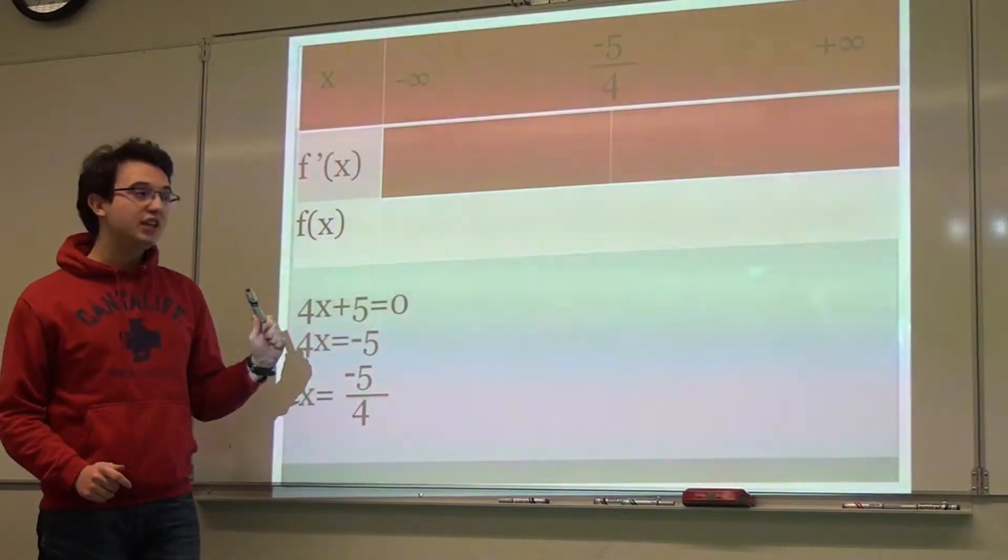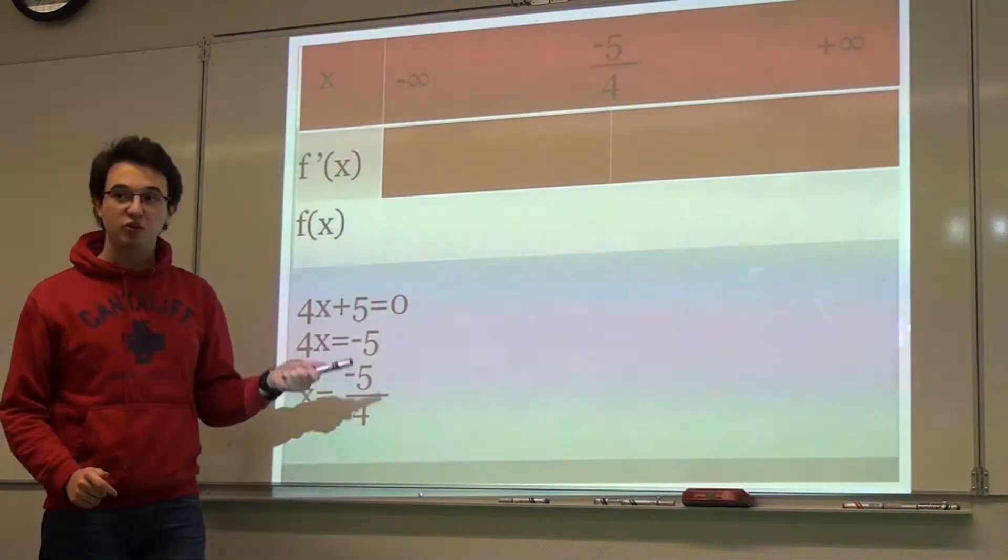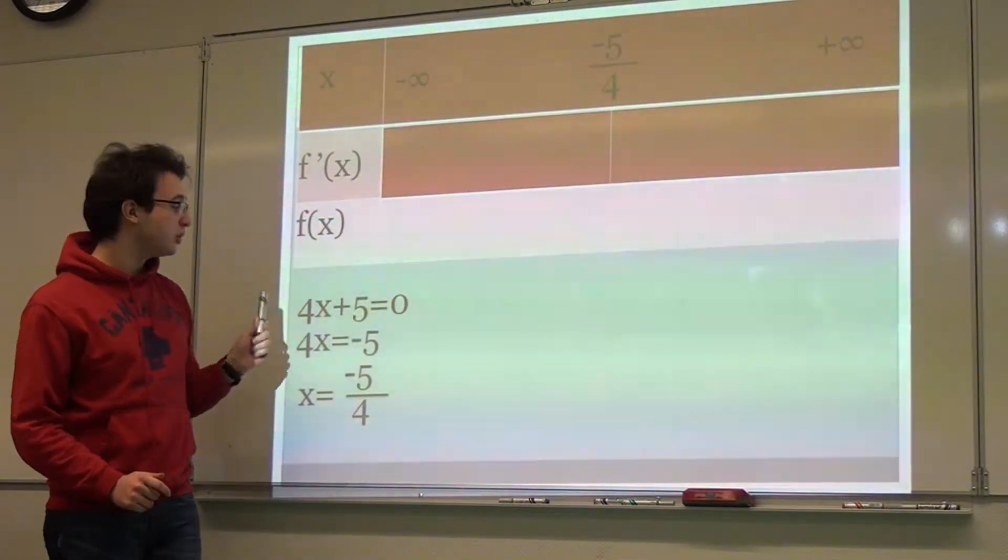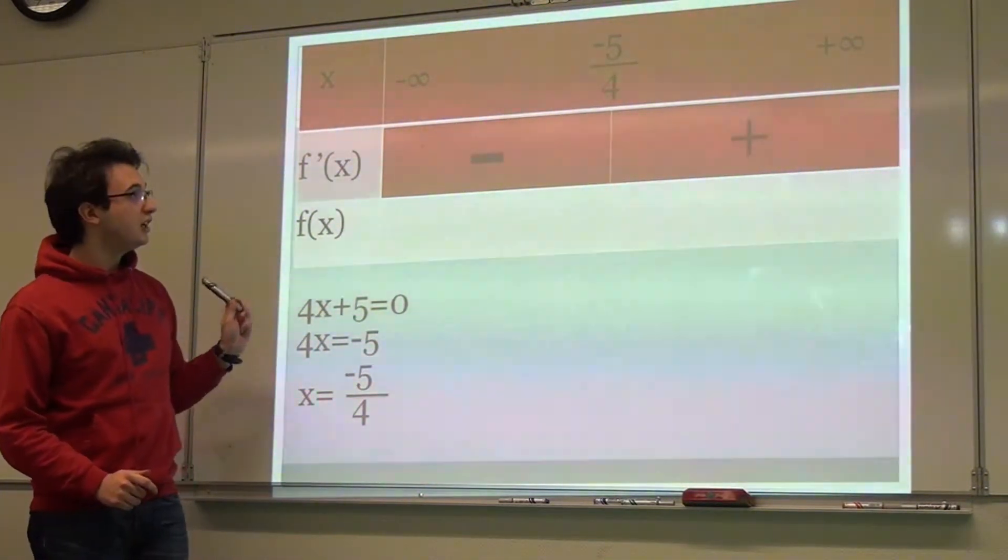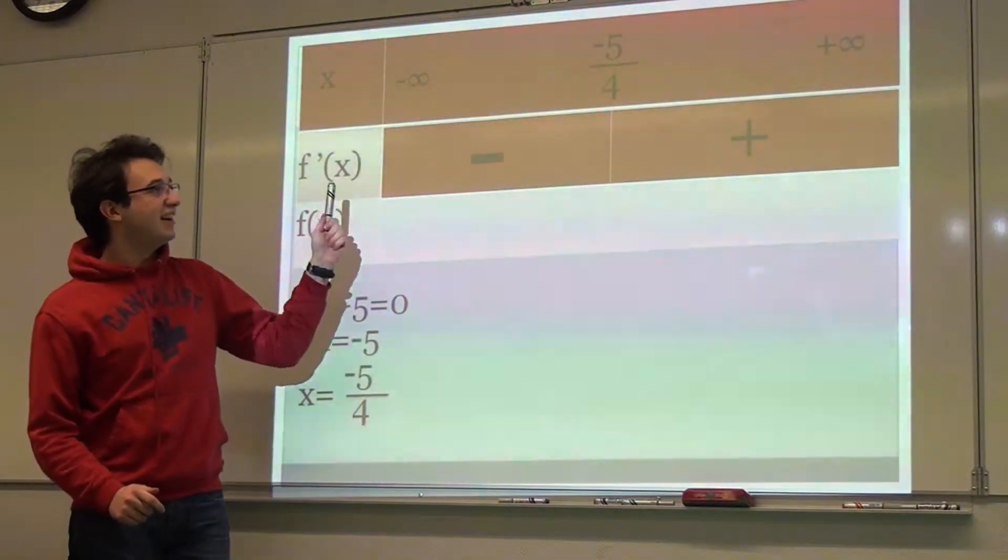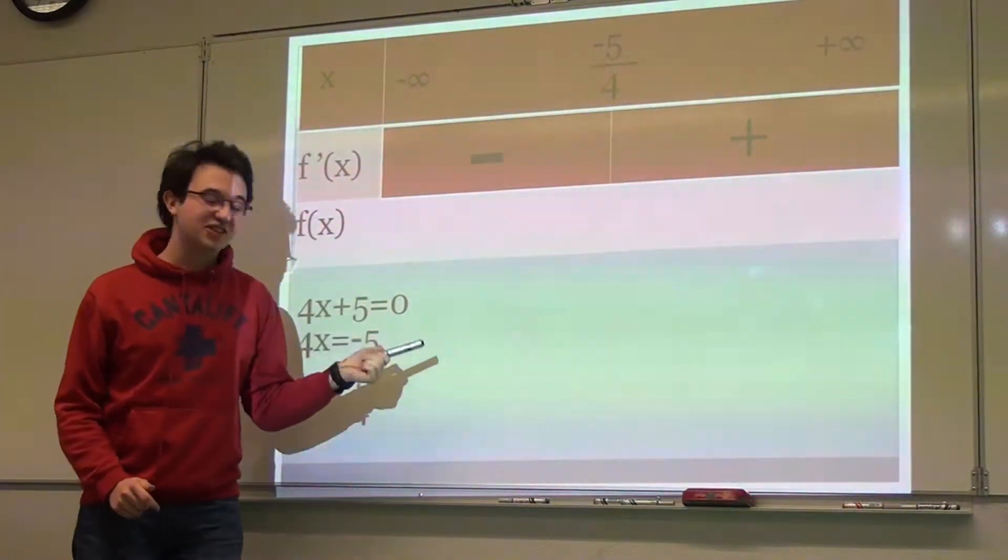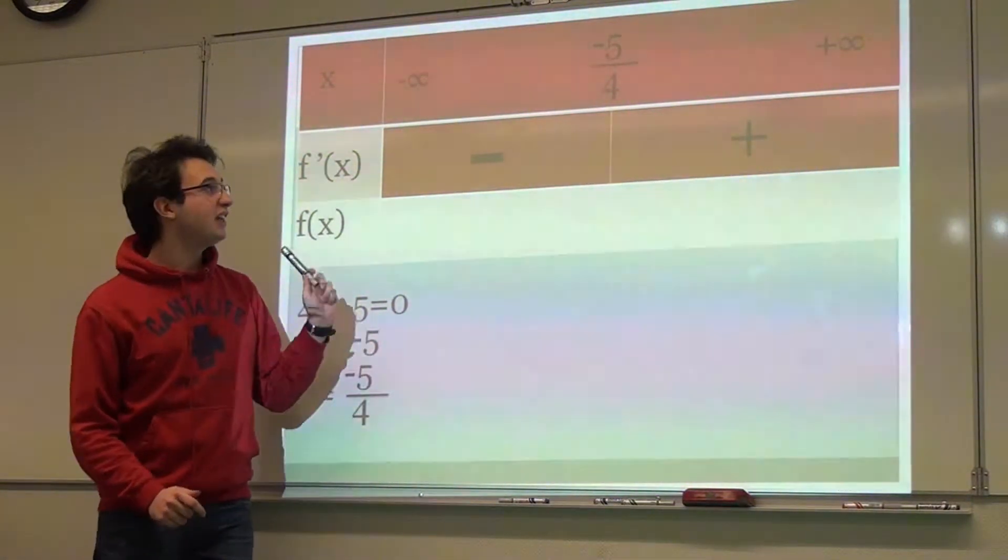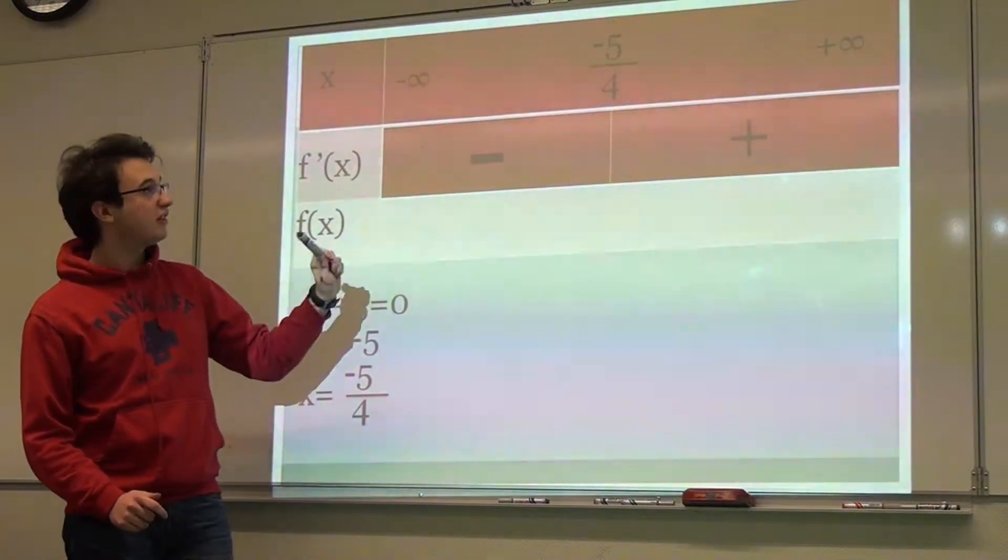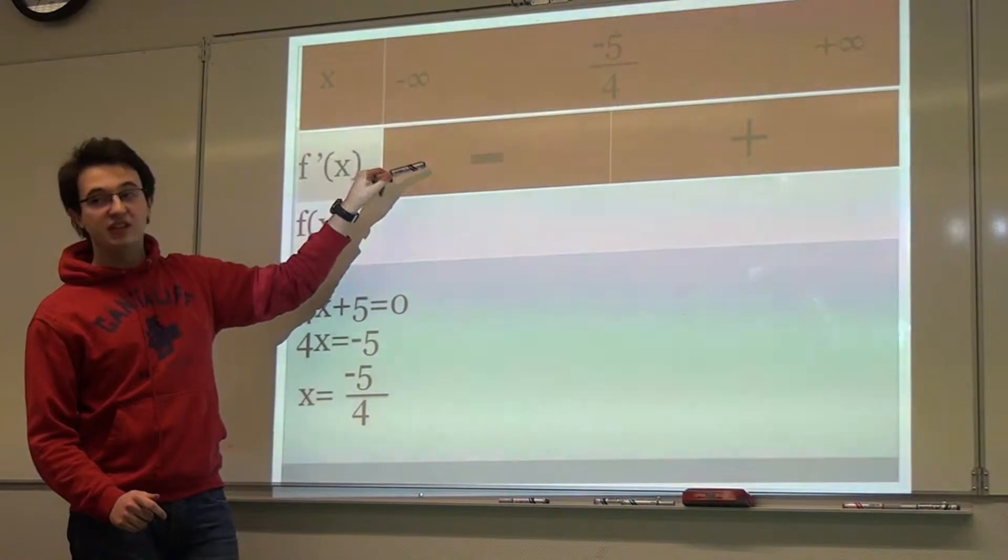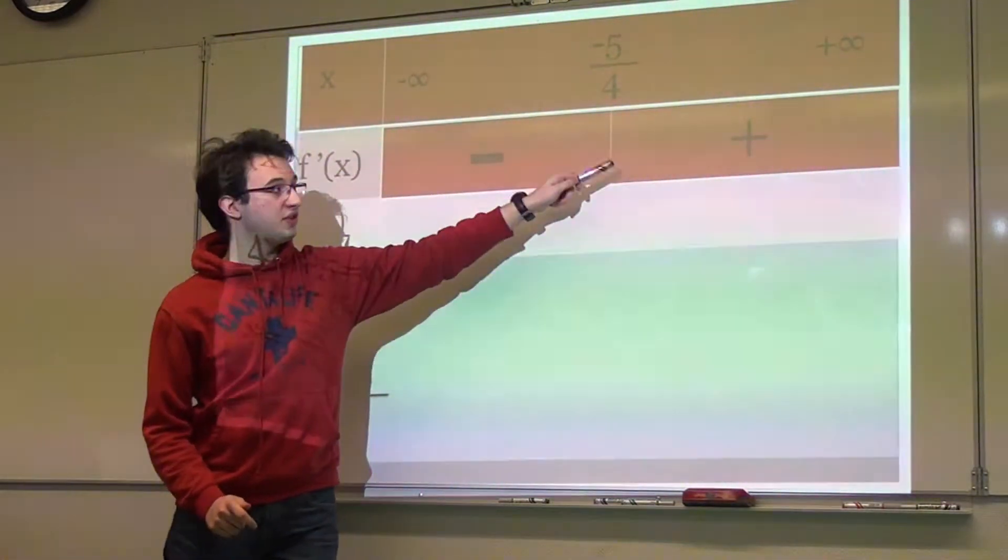When we use the derivative on a quadratic function, we get the equation of a line. Because the coefficient is positive, I know that before x = -5/4, the derivative is negative, and then it's positive.